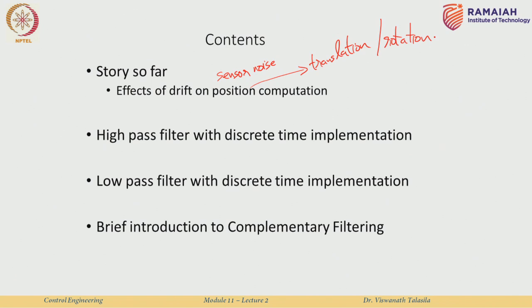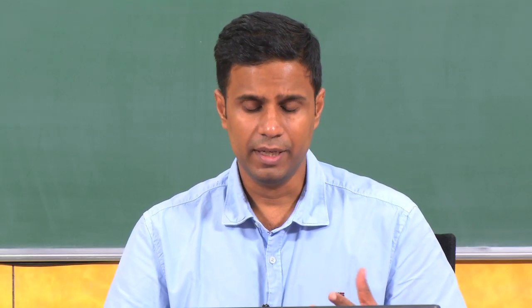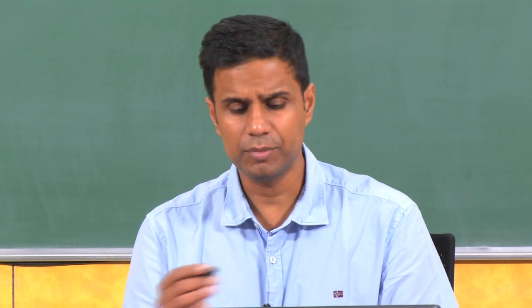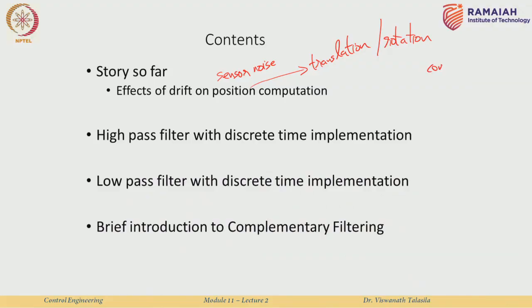We saw that there are various types of noise: constant bias, drifting bias, angle random walks, and so forth. For the kinds of applications we typically deal with in consumer electronics and even basic medical applications, it is sufficient to deal with the constant bias. If you are able to estimate the constant bias and remove it, you will get a very good position estimation.